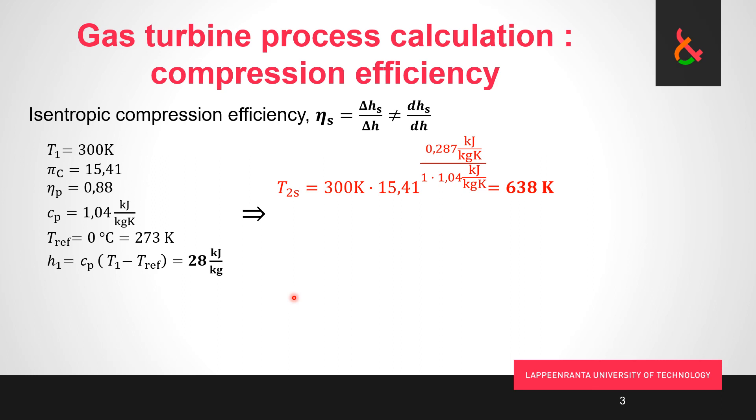Our isentropic efficiency of this compressor is going to be the ratio of the total isentropic compression delta h divided by the delta h of our actual compression. This is the same for a differentially small ratio. Temperature at the end of the isentropic compression is 300 times pressure ratio to the power of these figures that we just covered. Now because it's isentropic, our efficiency is 1. We get 638 Kelvin.